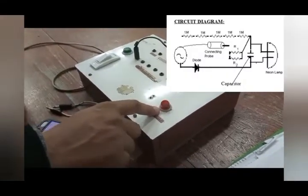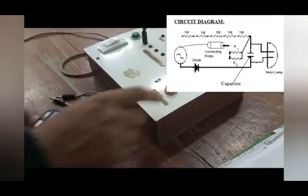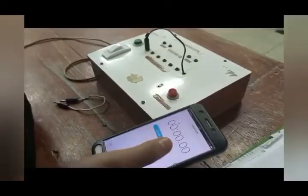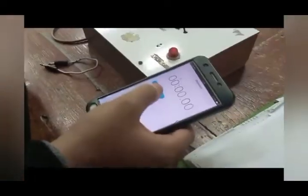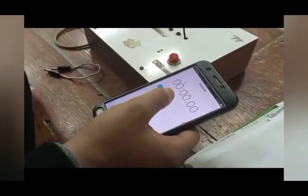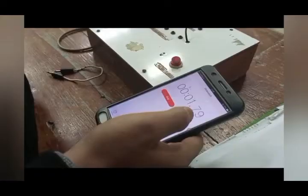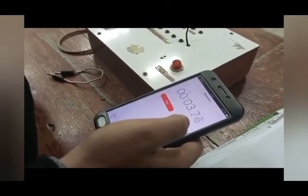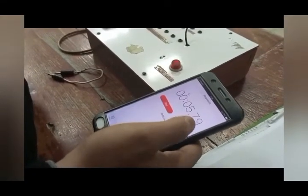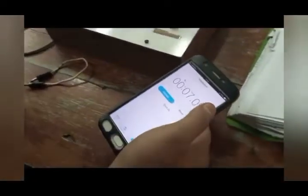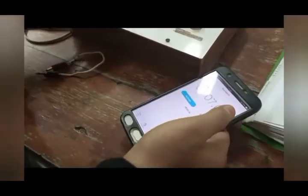Now, with the help of stopwatch, we have to calculate the time for 10 flashes for each resistance. Like this: 1, 2, 3, 4, 5, 6, 7, 8, 9, 10. This is the value of 10 flashes.